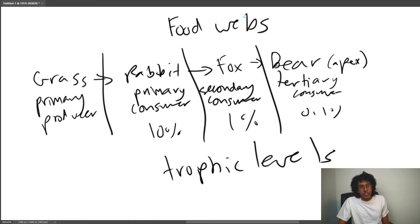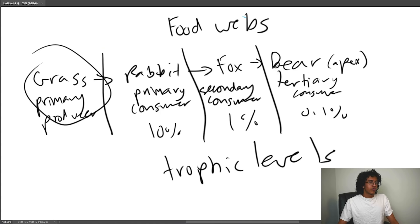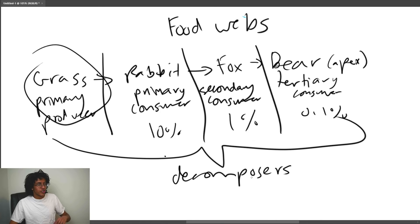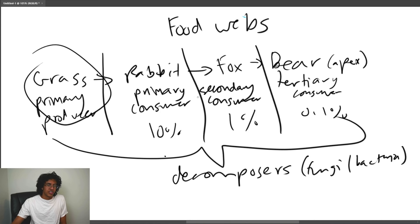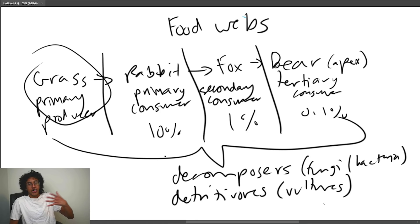Outside of food chains, there are decomposers — fungi and bacteria — that break down dead organisms by secreting chemicals that decompose molecules into their basic forms in the environment. There are also detritivores, like vultures, which eat dead material but ingest it and break it down internally. The key difference is that decomposers break material down externally in the environment, while detritivores ingest it first. Increasing primary producers increases all levels above; decreasing apex predators causes an alternating effect — some levels go up, others down.